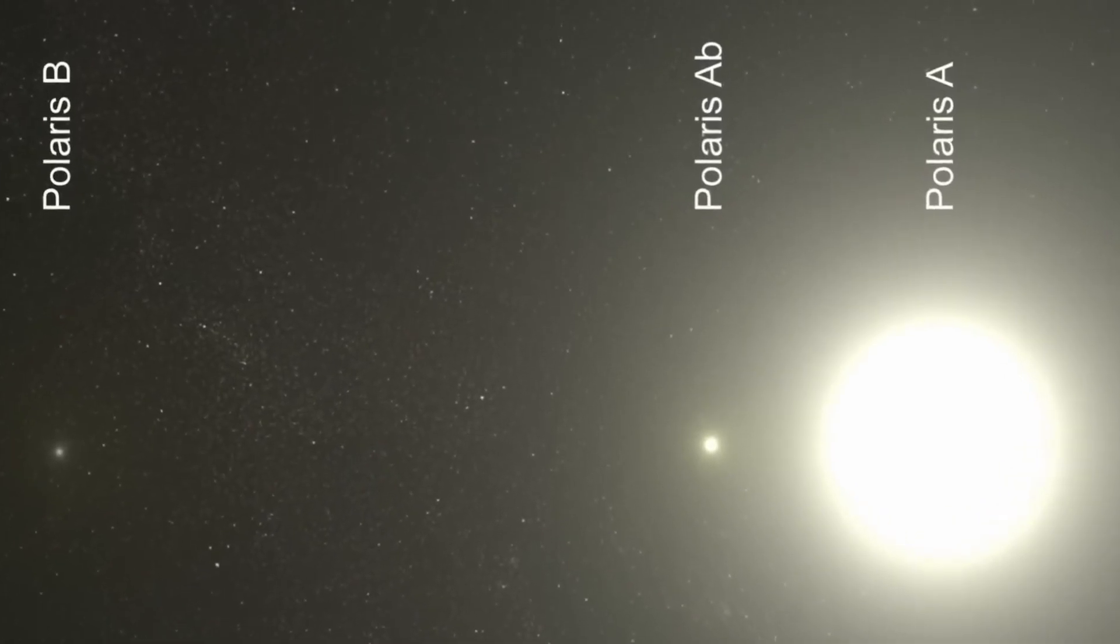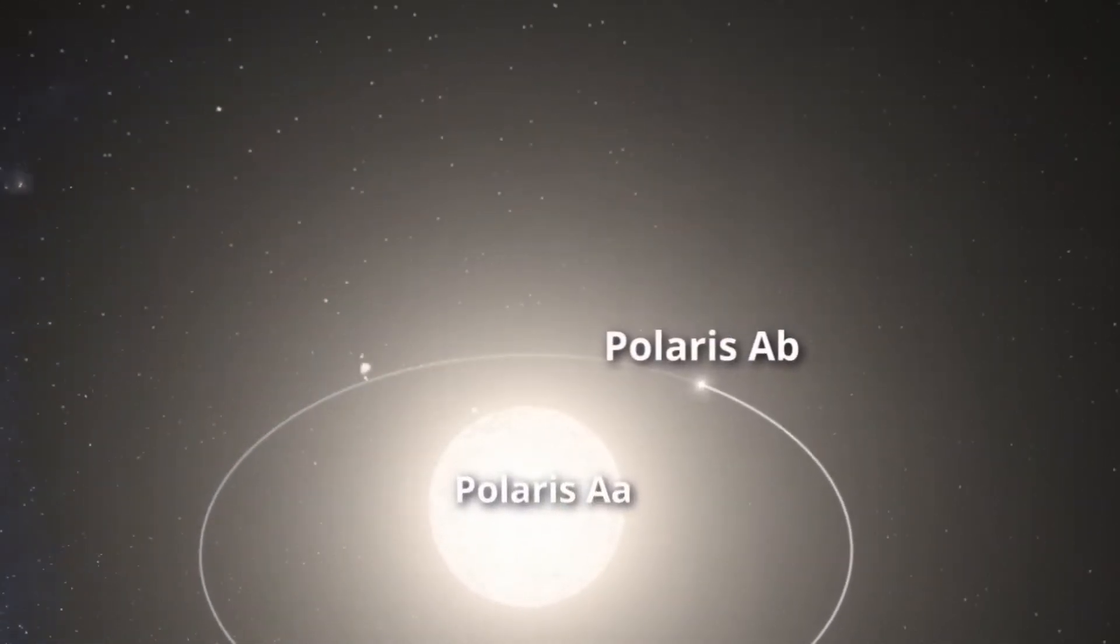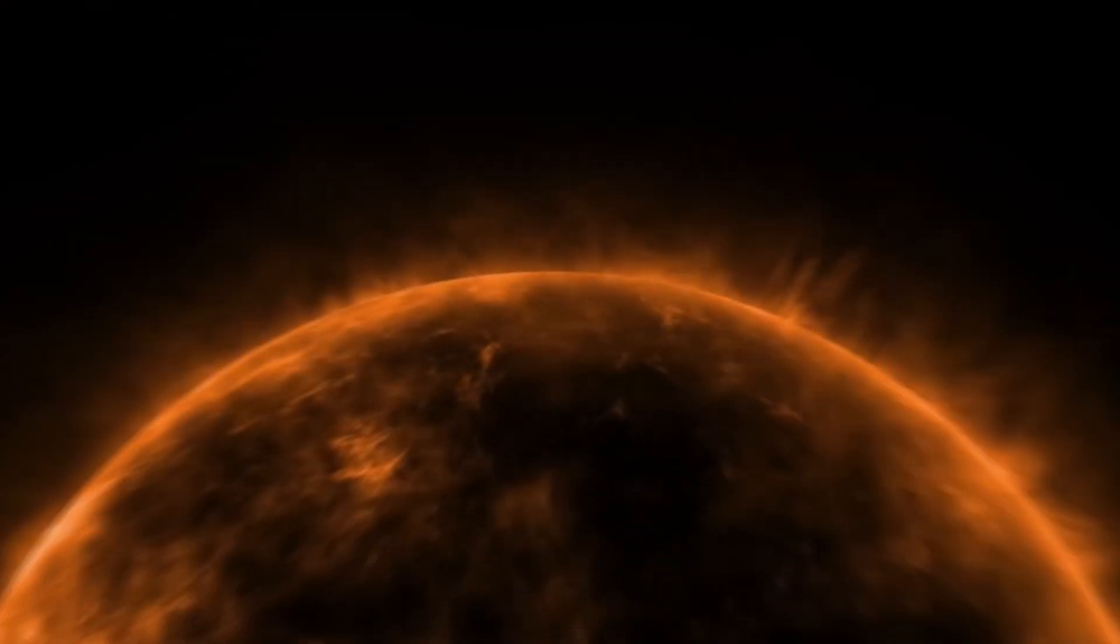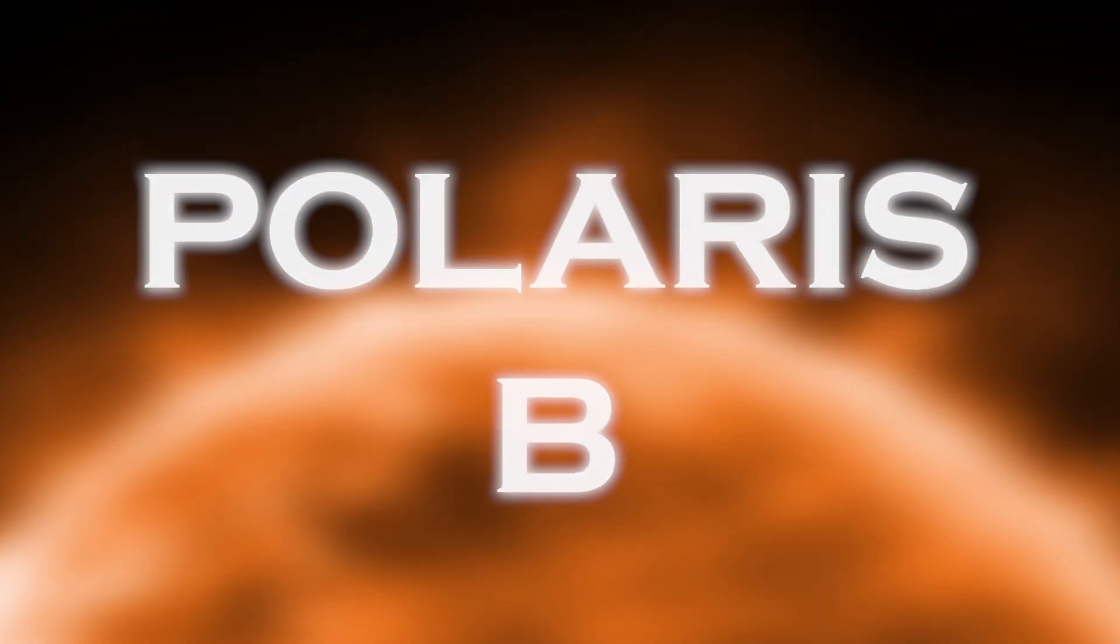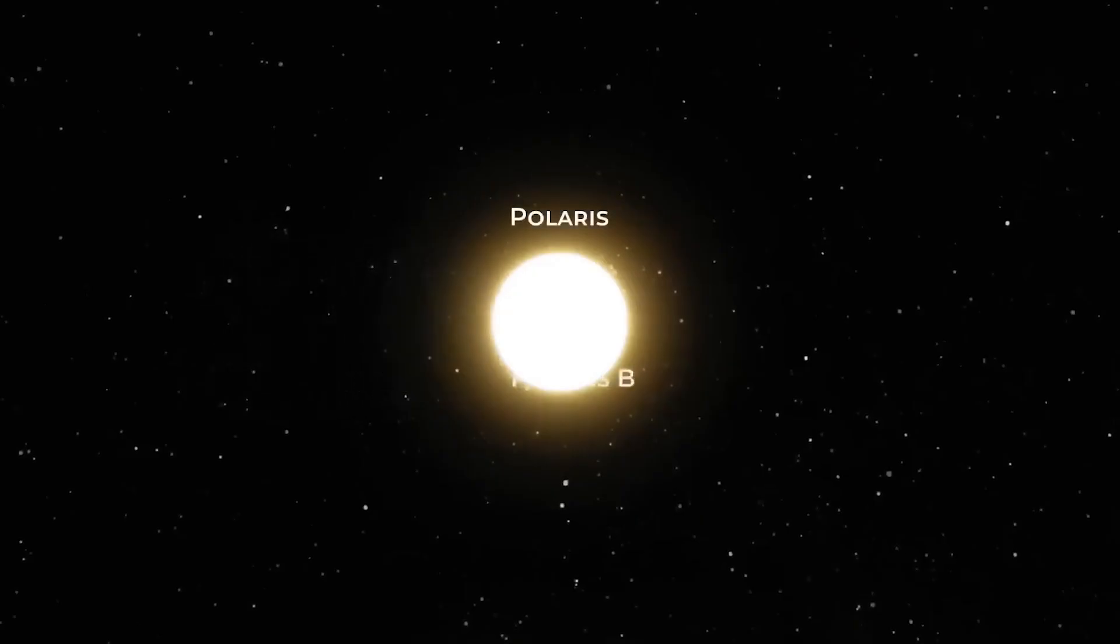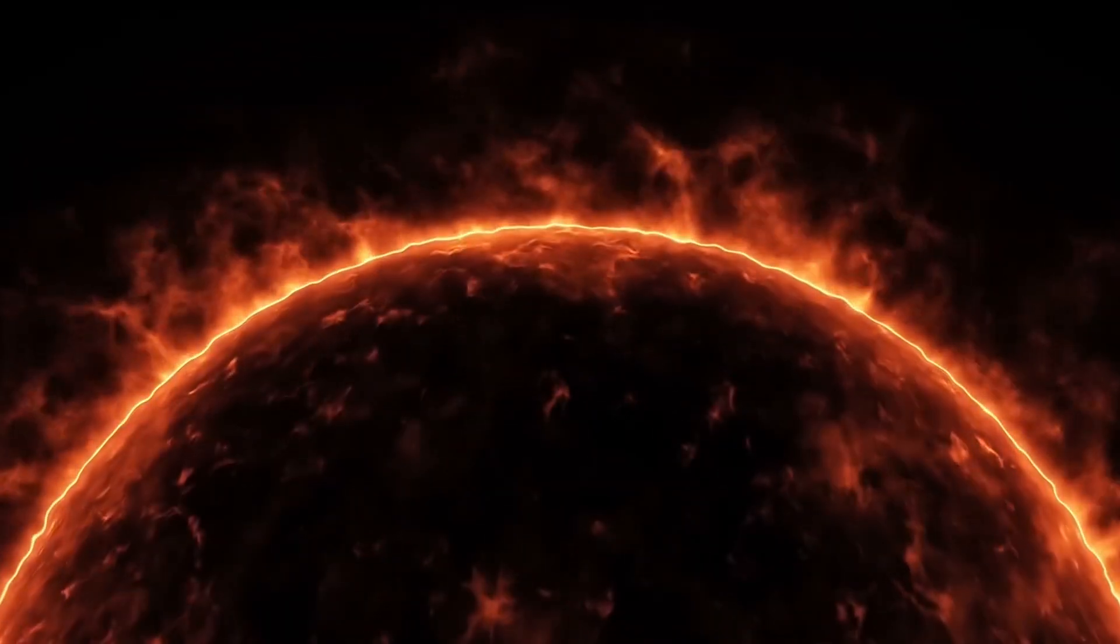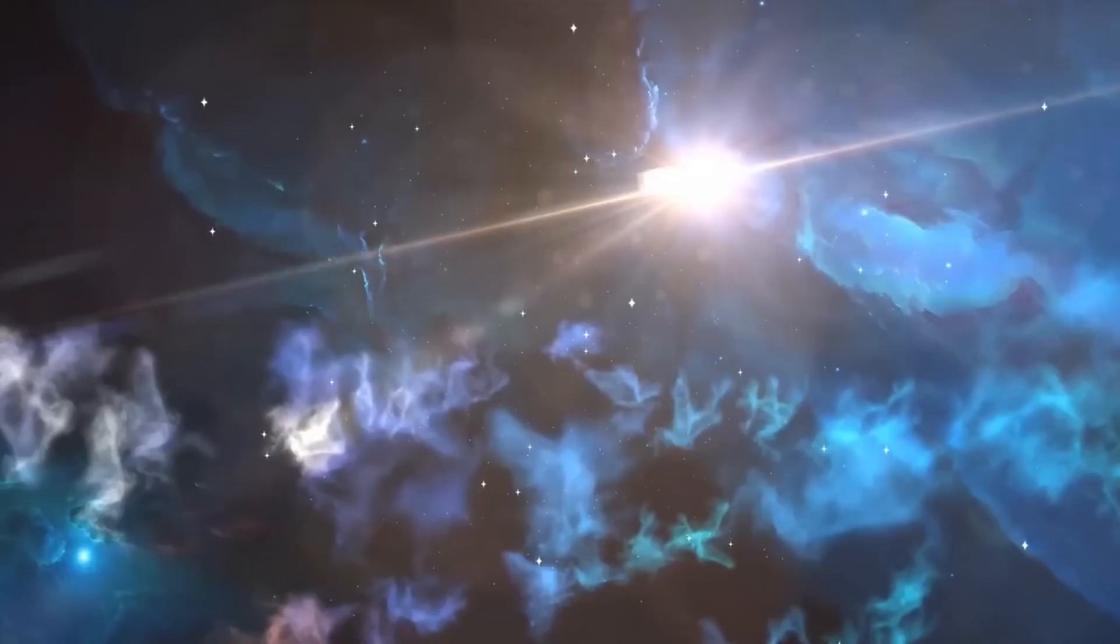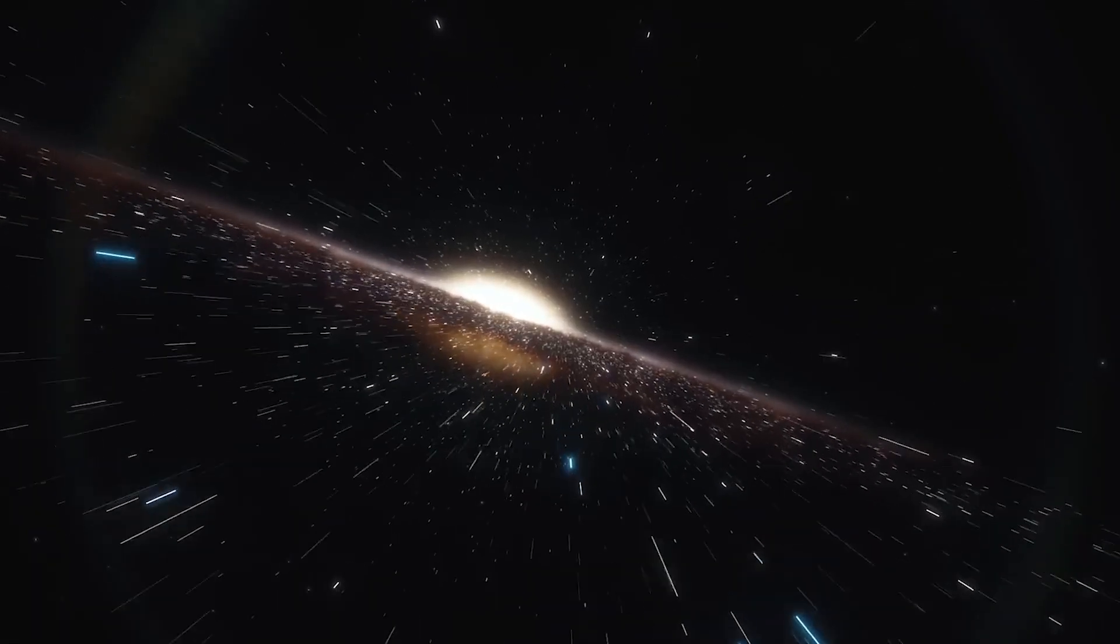Within this system, the primary stars are Polaris AA and Polaris AB, which when seen with the naked eye, look like a single star. In addition, there is a third companion, Polaris B, orbiting this binary pair. The gravitational forces between these stars shape their orbits and affect their individual behaviors, which has a direct impact on their brightness and other notable characteristics.